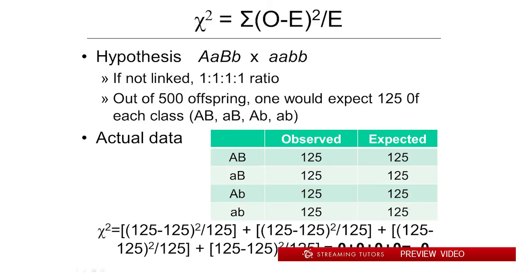All right, so in other words, here's a situation, and I kept the formula on the top there just so we can refer to it. So we've got a cross, and the cross is AaBb times aabb. This is of the form that we've done recently.